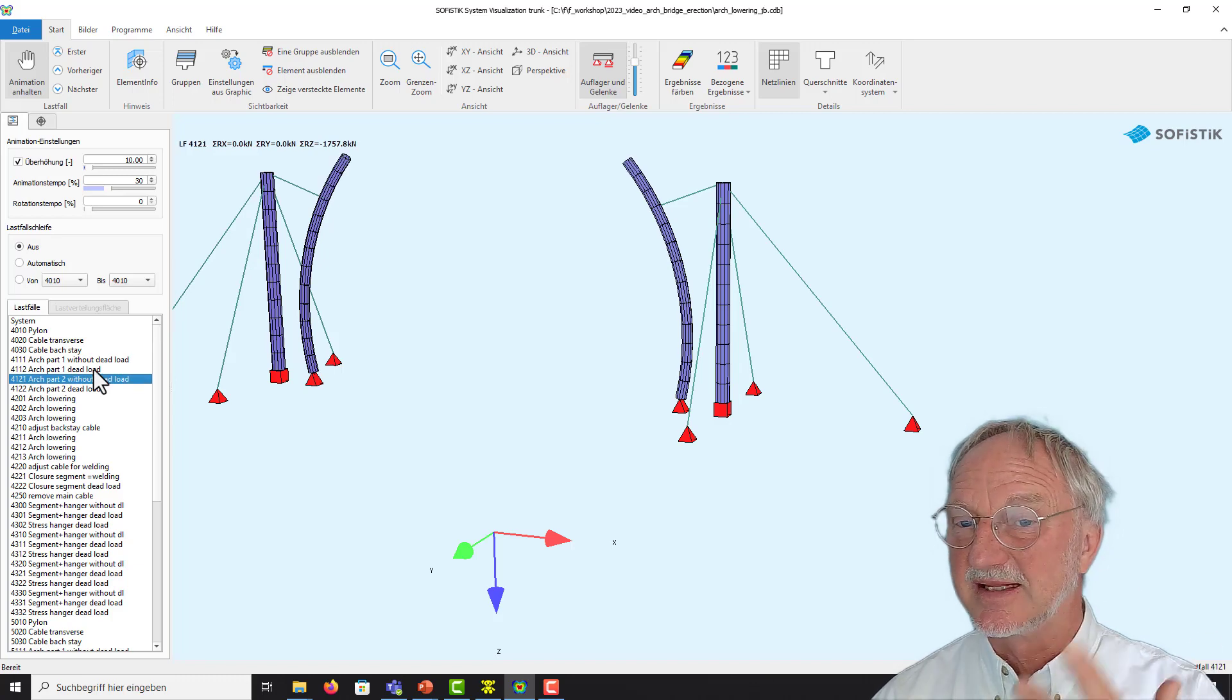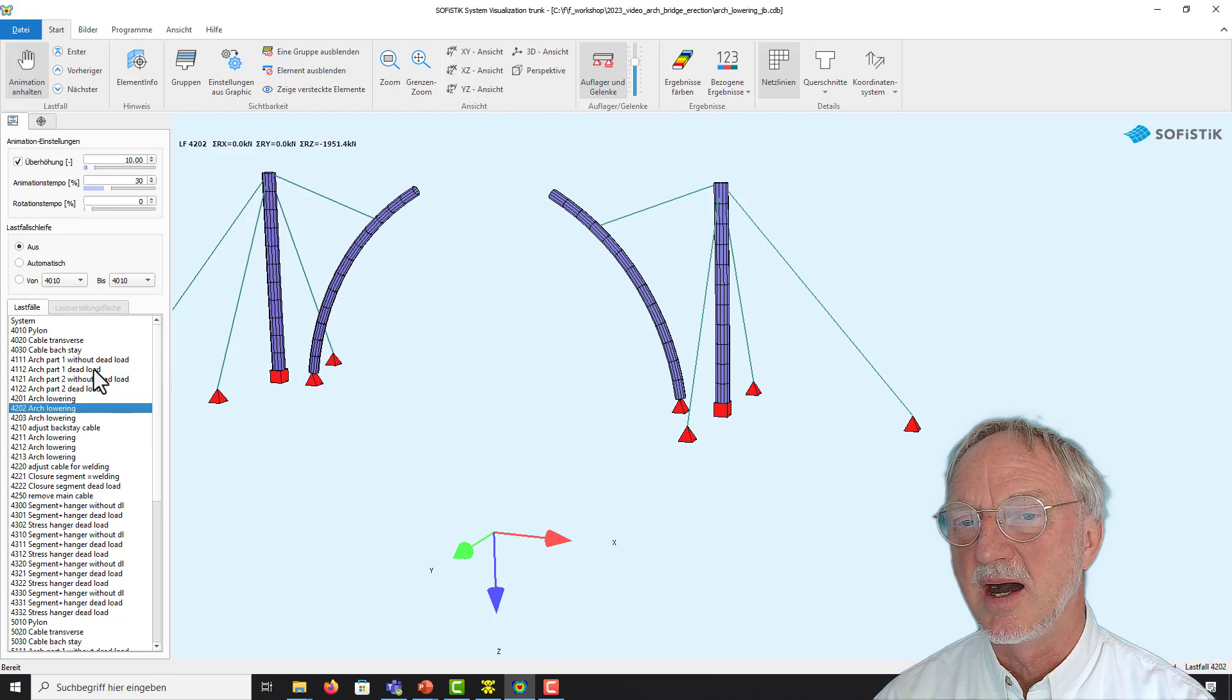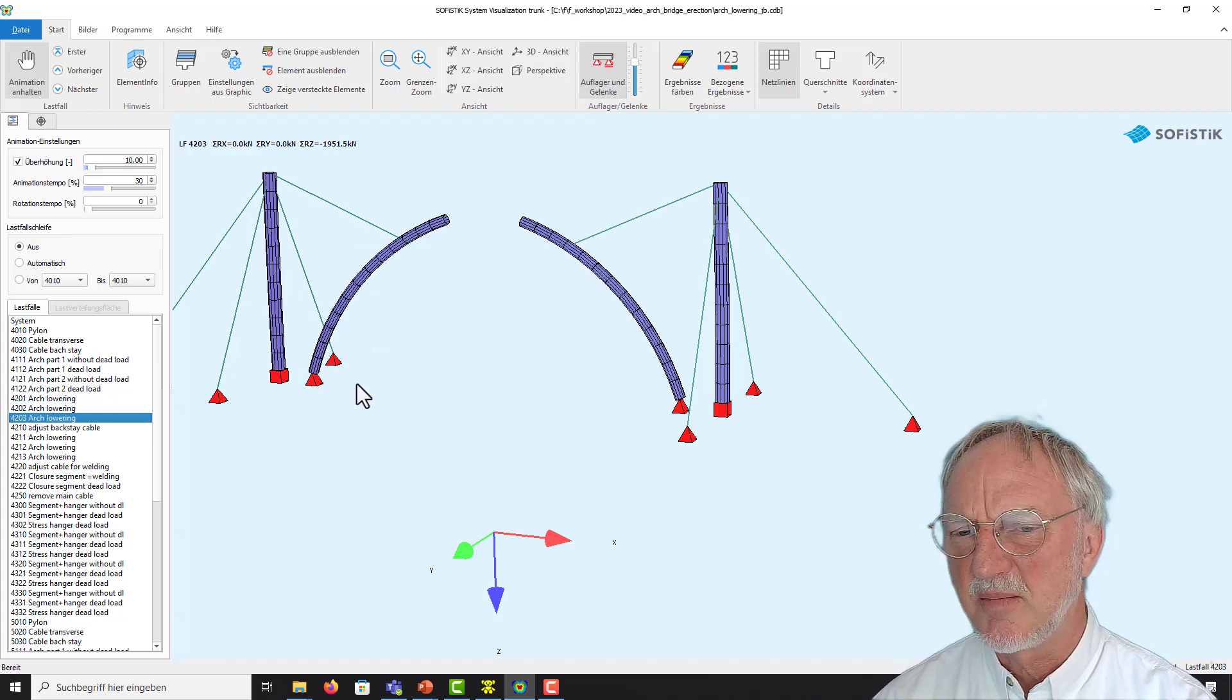Then we activate the second part. And now we lower our arcs with this launching command.